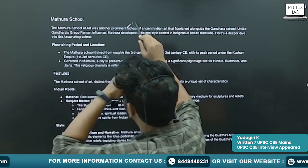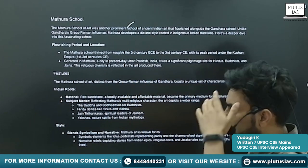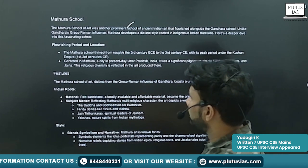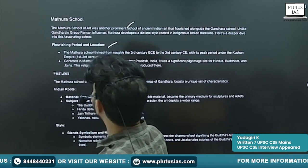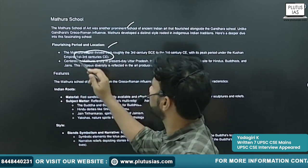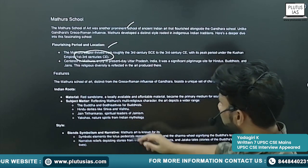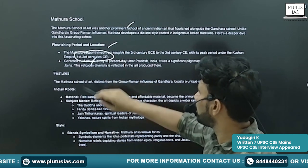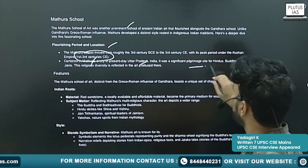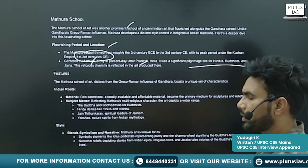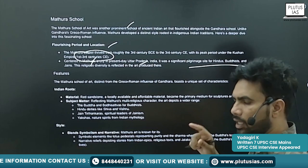Flourishing period and locations: it flourished between the 1st and 3rd century BC. It is centered around Mathura in present-day Uttar Pradesh, India.